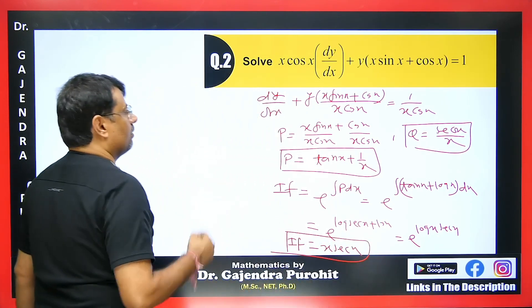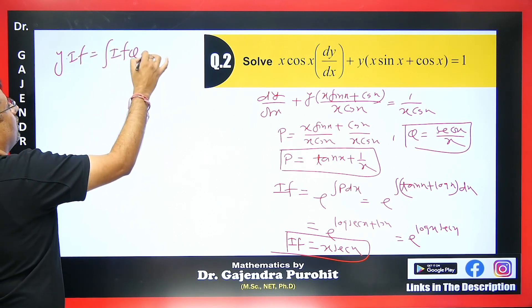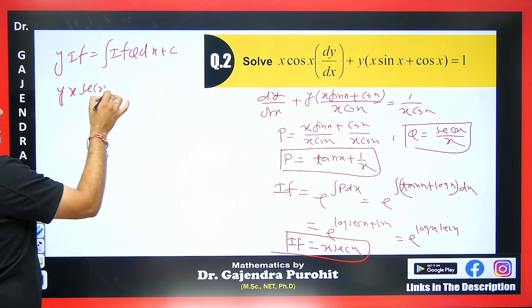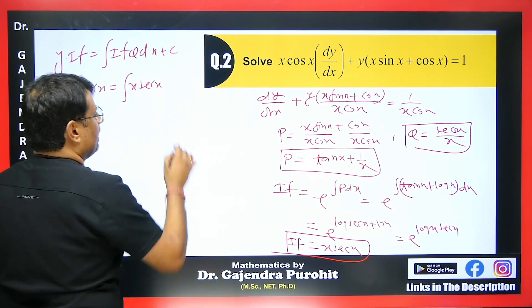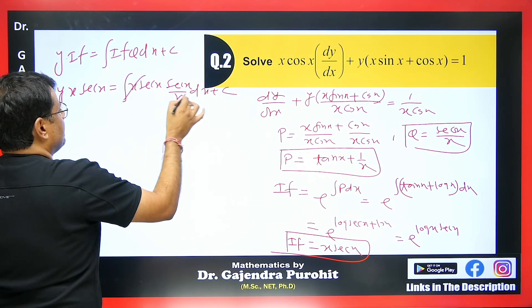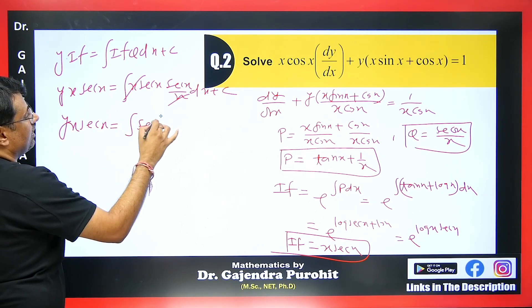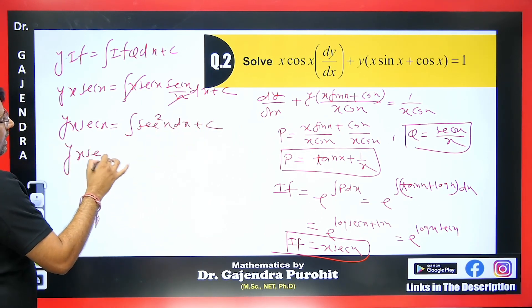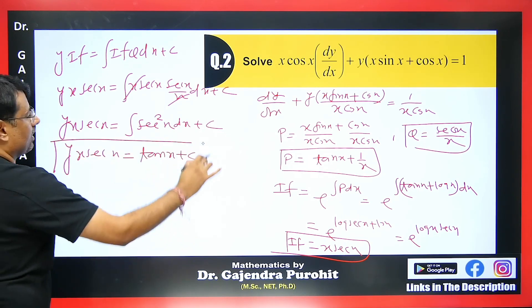Since this is linear in y, y·IF = ∫IF·Q dx + c. With IF = x·sec x and Q = sec x/x, multiplying gives y·x·sec x = ∫x·sec x·(sec x/x) dx + c. The x cancels, leaving y·x·sec x = ∫sec²x dx + c = tan x + c. Therefore, x·sec x·y = tan x + c. This is how we solve this question.